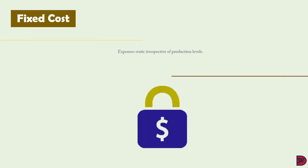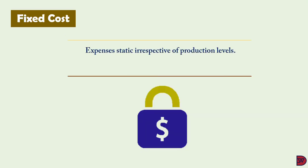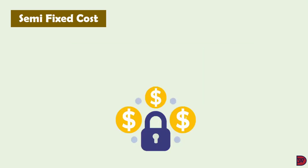Fixed costs, on the other hand, are expenses that remain unchanged irrespective of how many or how much a company produces. These costs are normally incurred whether a business produces or not, meaning they can never be zero. Examples include rent for factory or office buildings, salaries of administrative department staff, and vehicle insurance.